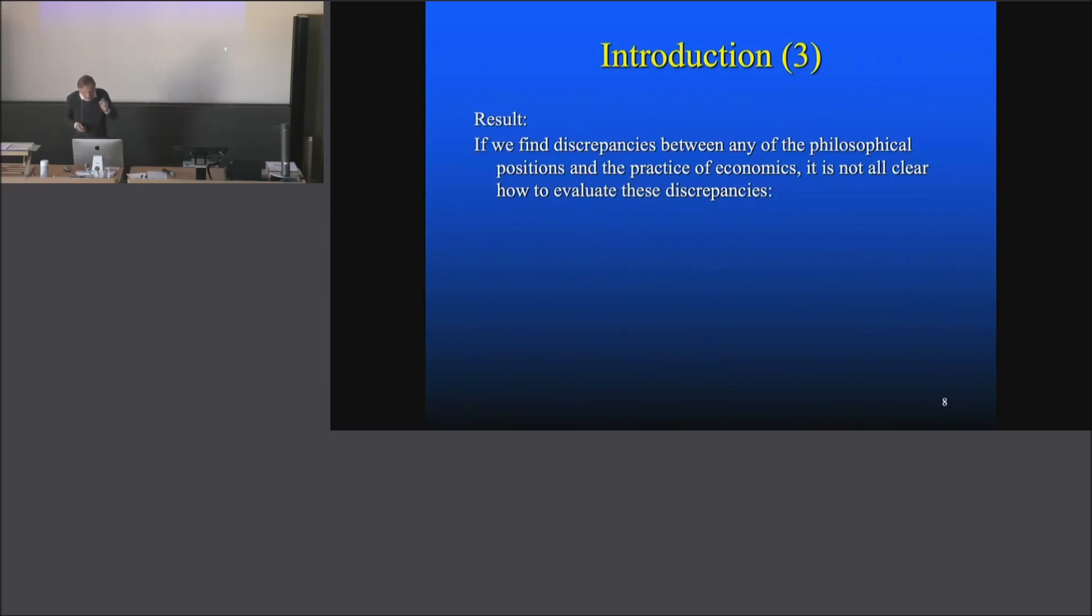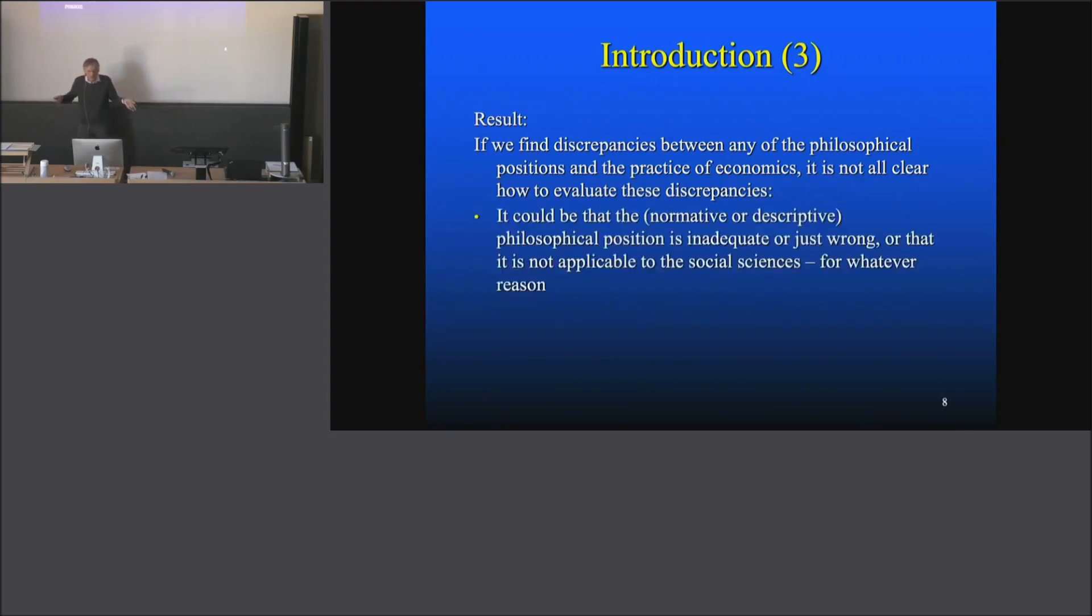The result is this, and that's important: If we find discrepancies between any of the philosophical positions and the practice of economics, it's not at all clear how to evaluate these discrepancies. You read something in philosophy about science, then compare it with economics and say, 'Oops, that's different here.' So what do I make of this difference? There are two principal possibilities. It could be that the normative or descriptive philosophical position, depending which one you're talking about, is inadequate or just wrong, or it's not applicable to the social sciences for whatever reasons.